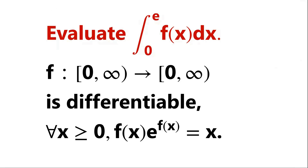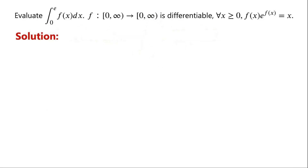Evaluate the integral from 0 to e of f of x with respect to x. We are given that function f, from non-negative numbers to non-negative numbers, is differentiable. For all x greater than or equal to 0, f of x times e to the power of f of x equals x. We don't know what f of x is — just knowing it satisfies that equation. How do we evaluate the integral?